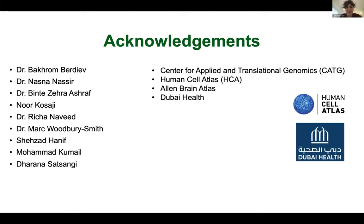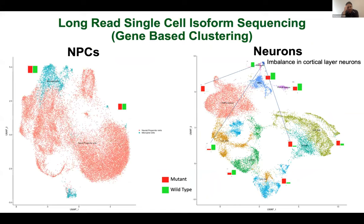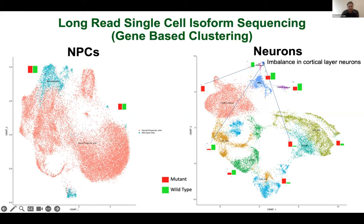Thank you. Please type your questions in the Q&A. One question: how reproducible are the mutant-to-wild-type ratios in different classes? Through differentiation and proliferation there are many stochastic components.